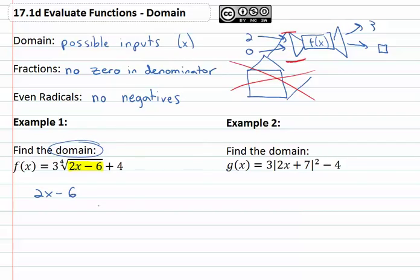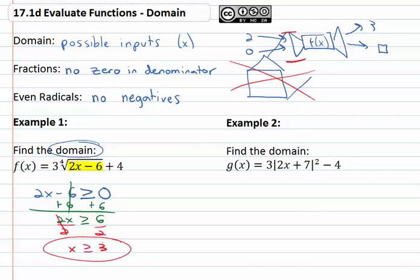This 2x - 6 can't be negative, which means it must be greater than or equal to zero. Because if it goes smaller than zero we're now negative and it won't fit in the function. Well we can solve this real quick by adding six to both sides, 2x is greater than or equal to six, and then finally dividing both sides by two. We find out x is greater than or equal to three.